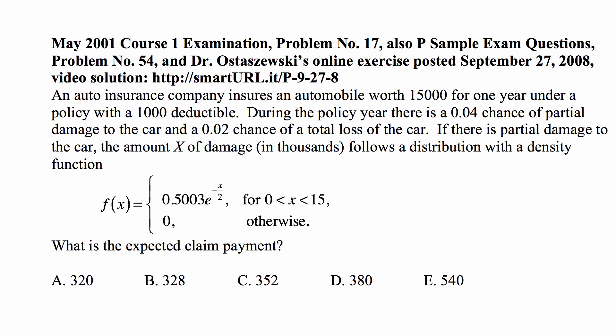Here's a problem for today for exam P. An auto insurance company insures an automobile worth $15,000 for one year under a policy with a $1,000 deductible. During the policy year, there is a 0.04 chance of partial damage to the car and a 0.02 chance of total loss of the car.